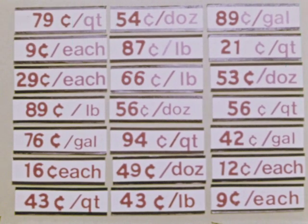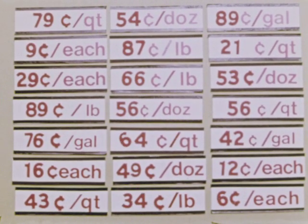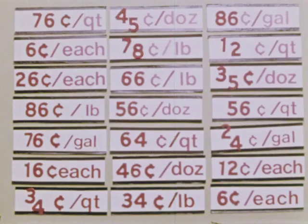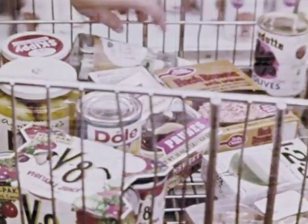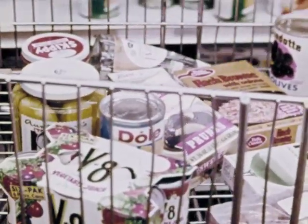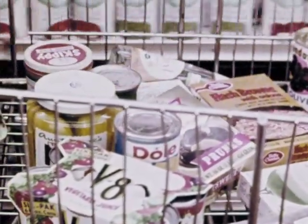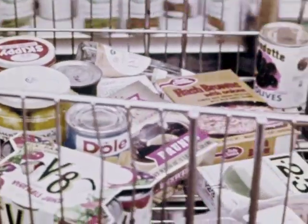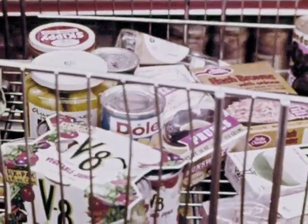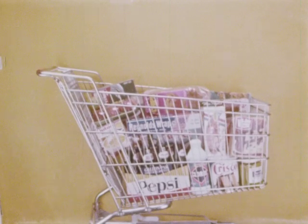Now if the prices of enough items go down, then what you can buy with a given amount of money changes. This means your money changes in value. There are ways of keeping track of this change in value of the dollar. One way economists do it is by selecting certain goods and services that an average city family buys.